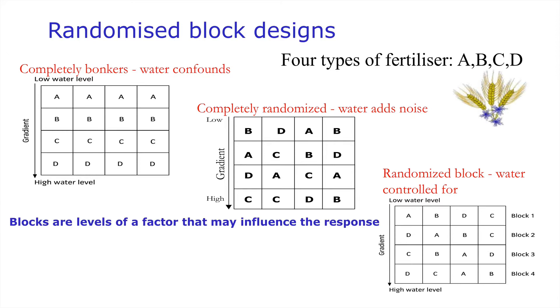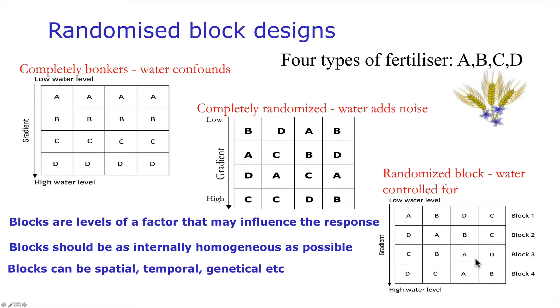Blocks are typically levels of a factor that may influence a response. Although we are not necessarily interested in them in their own right we only want to get a better understanding of the role of another treatment in influencing that response. Blocks should clearly be as internally homogeneous as possible such that the same water levels should be approximately the same at least in each of these levels here of our blocks. Blocks can be spatial, temporal or even genetical and there are a lot of reasons why we might want to control for any given variable in our data.